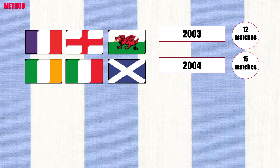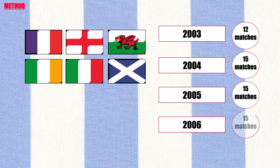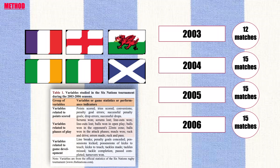The studied variables were divided into three groups. The first group of variables, points scored, describes the number of points scored and the way in which the points were scored. The second group of variables, phases of play, describes the way teams obtained the ball and how the team used it. And the third group of variables, game development, describes technical and tactical aspects.